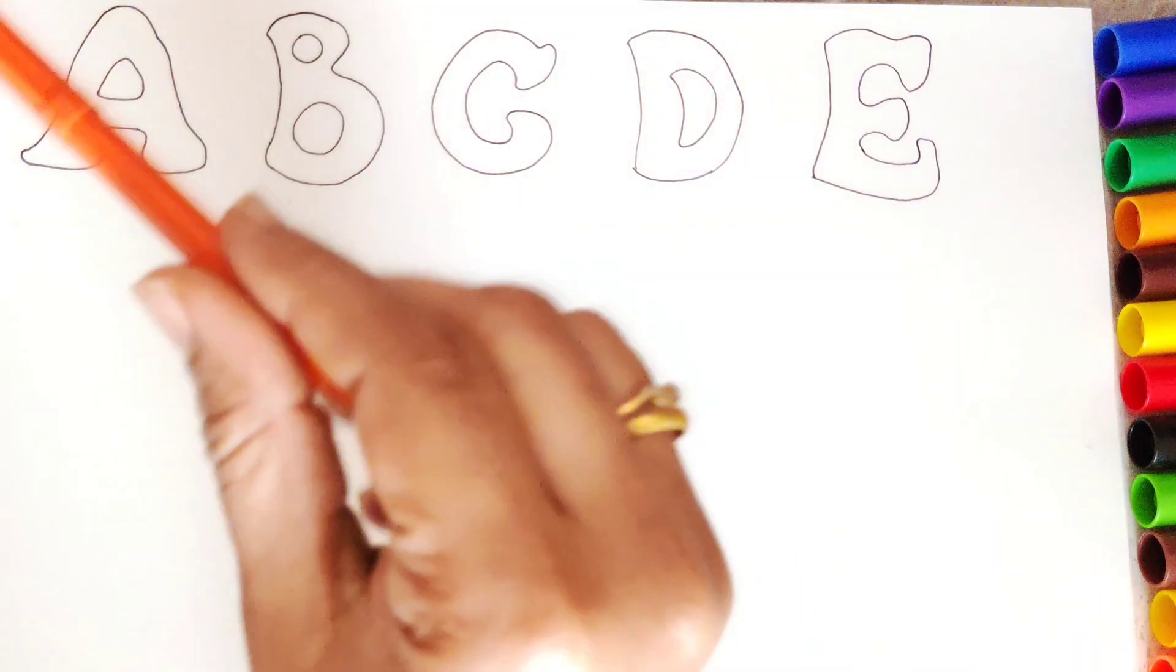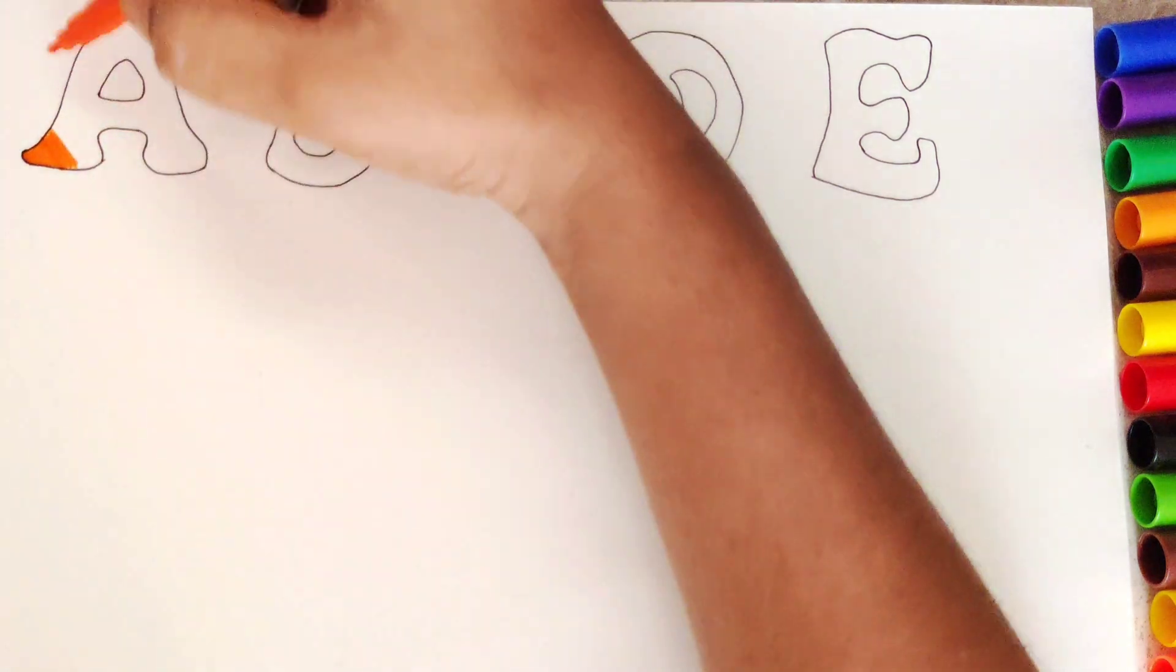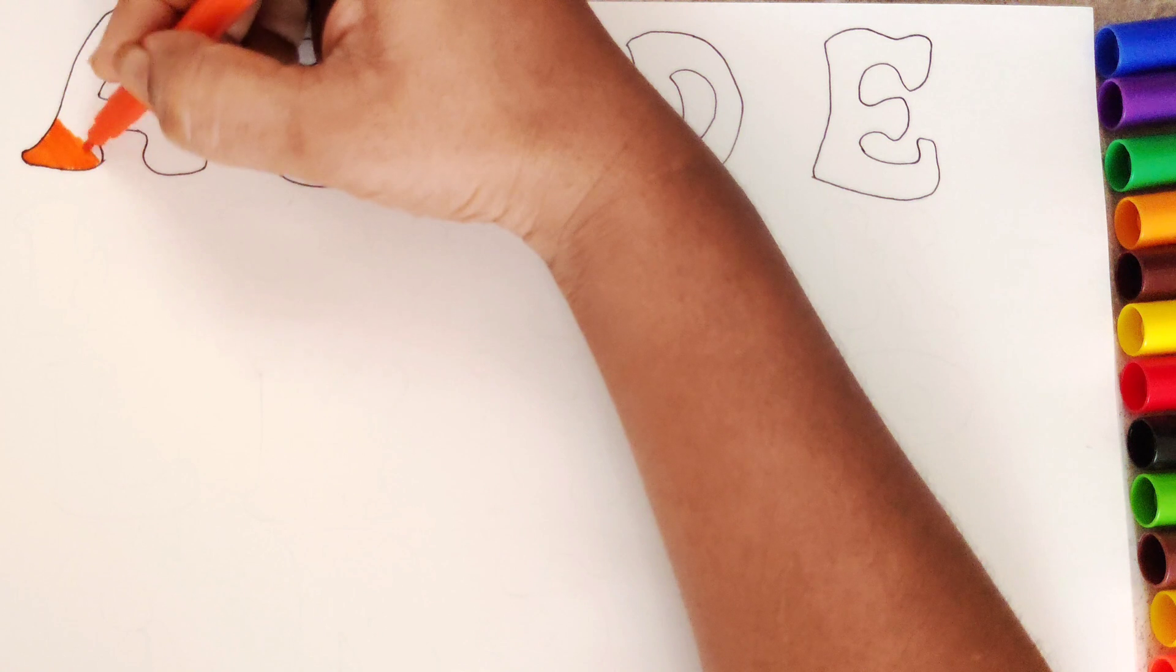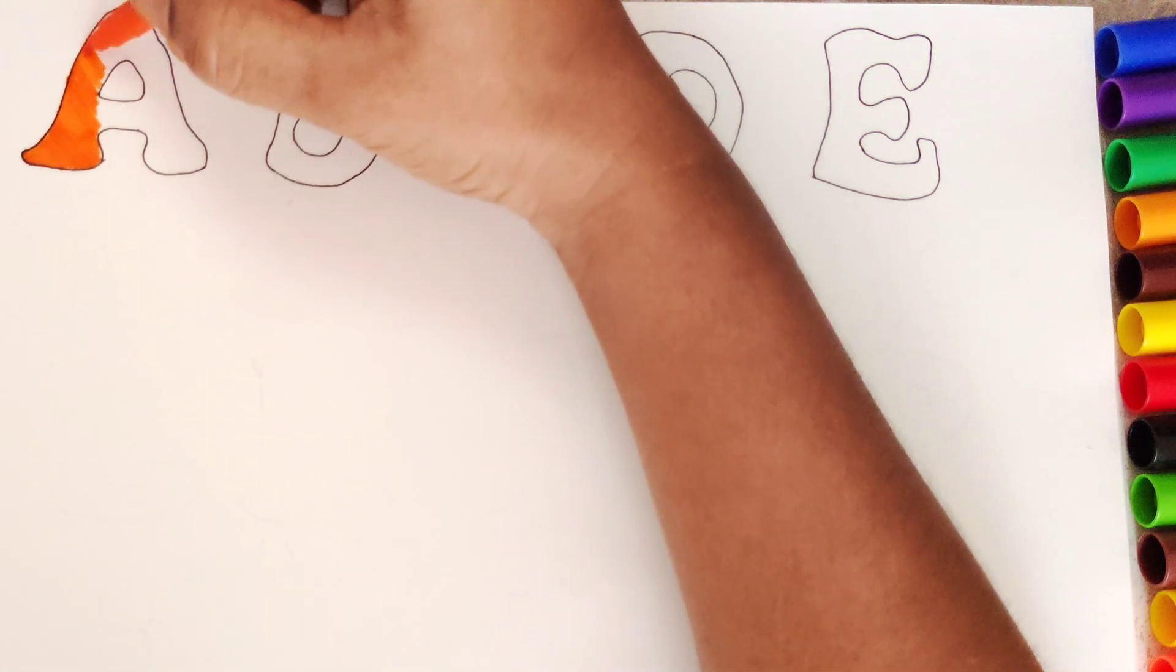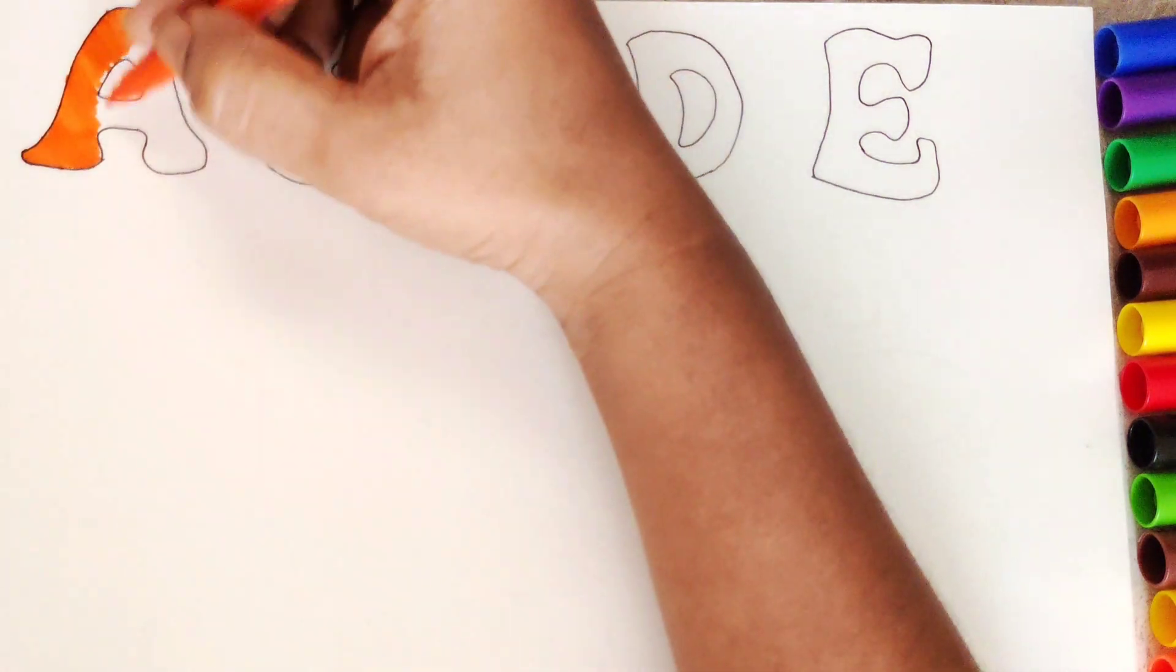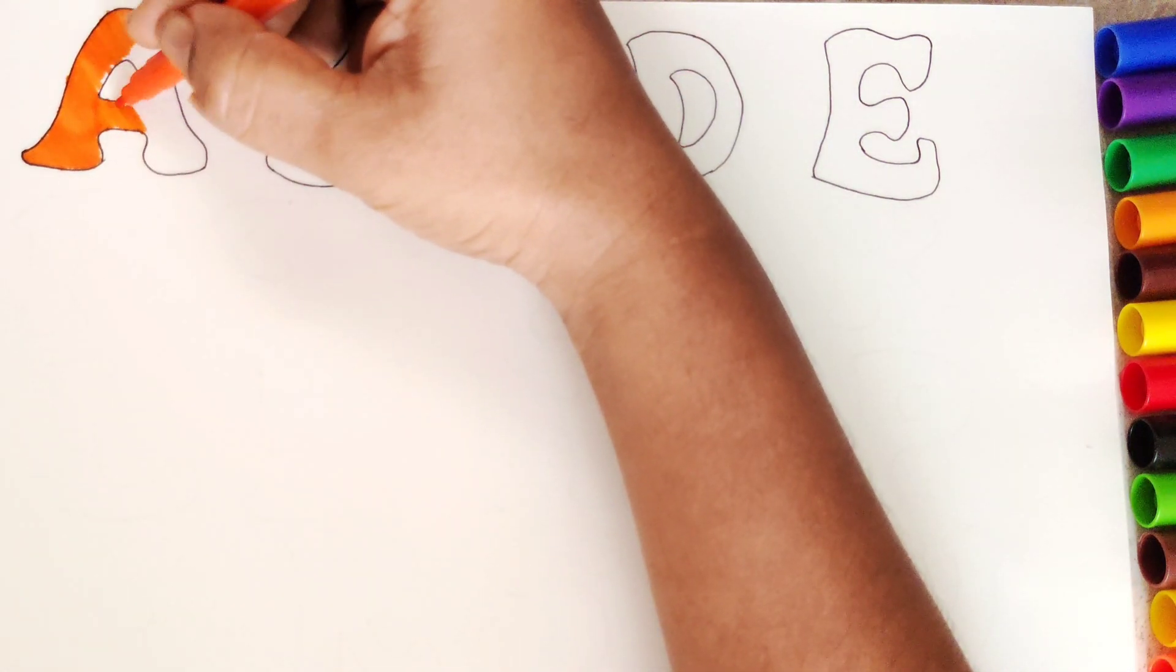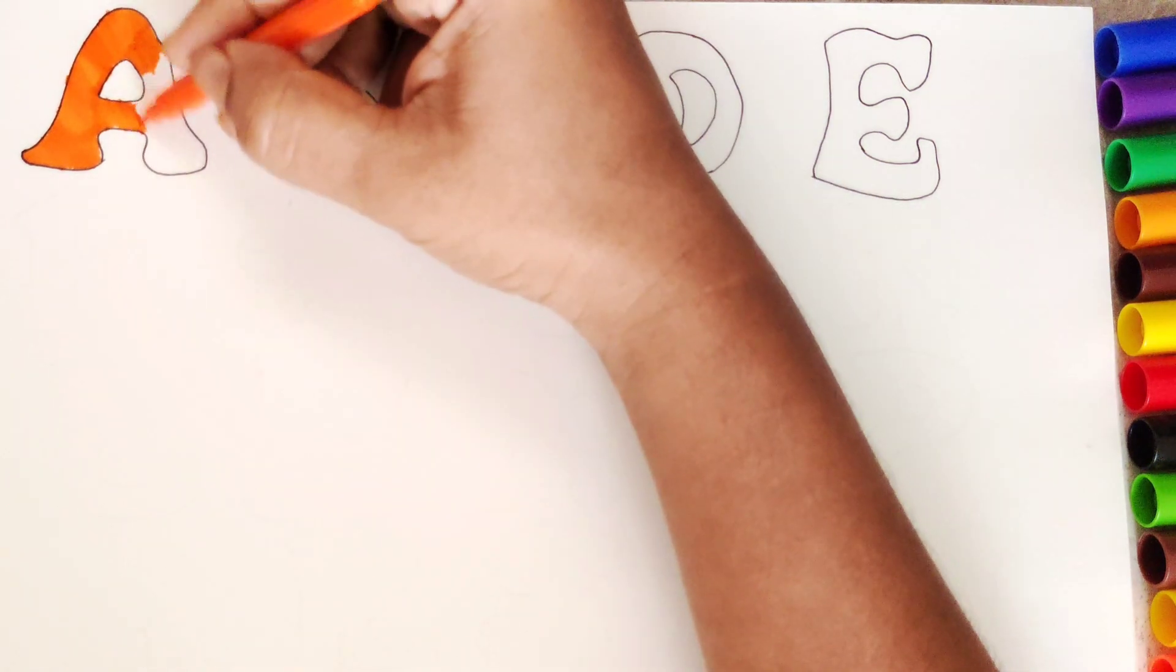Now we will color them. I am using orange color in filling the alphabets A, B, C, D, E. They will be all covered in orange color.